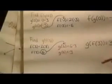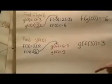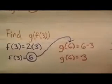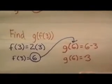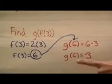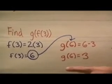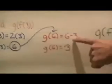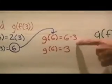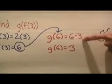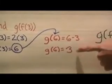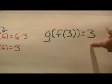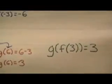The same thing works if you're trying to find g of f of 3. You take your 3 and put it into f, which is 2 times 3, and that's 6. Then you plug your 6 into g, which would be 6 minus 3, which equals 3. So g of f of 3 equals 3.